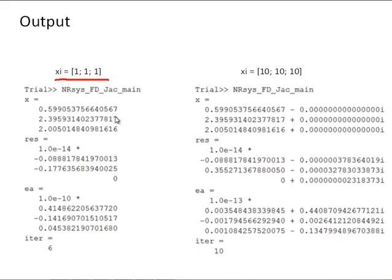It's about 0.6, 2.4, and 2. Very small residuals again. Approximate relative error on the order of 10 to the minus 10. Also very good. And quick convergence. Six iterations.